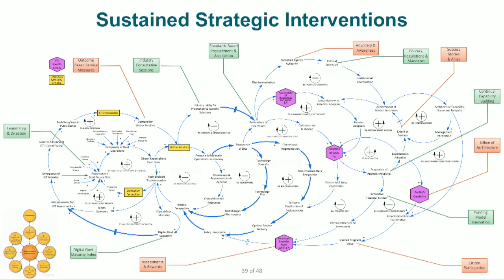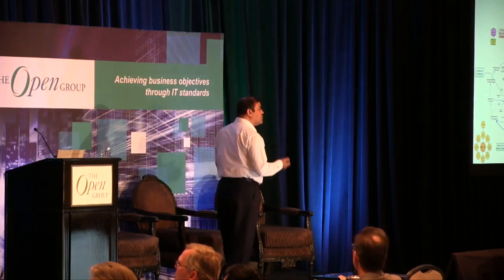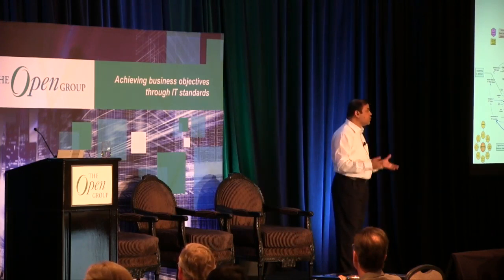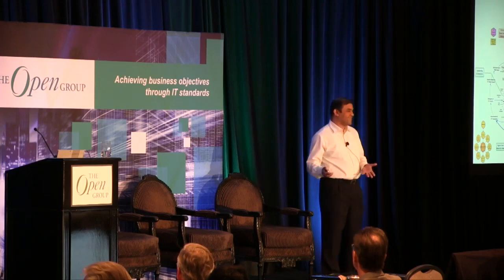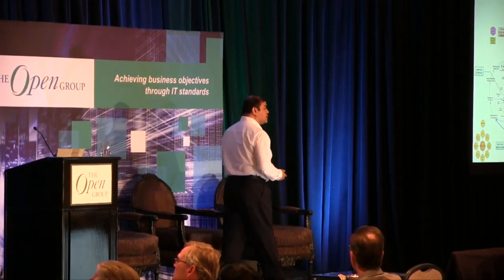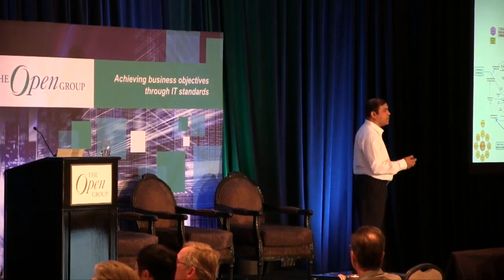The key interventions identified are: number one, digital leadership — we clearly identified you need an office of architecture with adequate authority. Number two, good consultative sessions with industry vendors, because they have to be part of the entire ecosystem. Number three, adoption of standards. Number four, a funding model — it's important when you come up with an enterprise architecture to think about how it is going to be funded, and who gets the benefits, which is very important in government. And capacity building sessions with state governments and ministries.